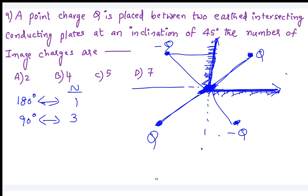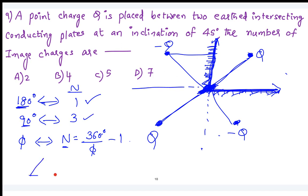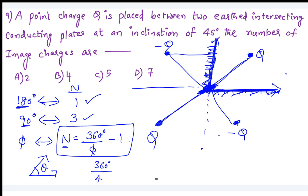Generalizing: for two conducting plates inclined at angle theta, the number of image charges equals (360 / theta) minus 1. For 180 degrees: 360/180 - 1 = 1. For 90 degrees: 360/90 - 1 = 3. In the given problem, inclination is 45 degrees, so the number of image charges is 360/45 - 1 = 7.